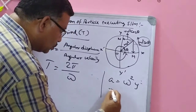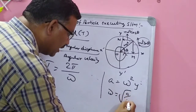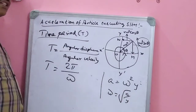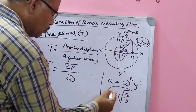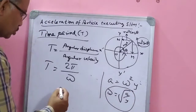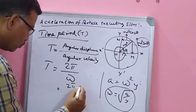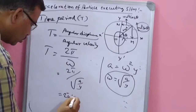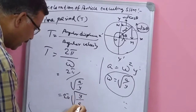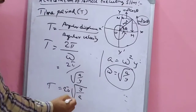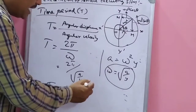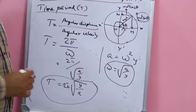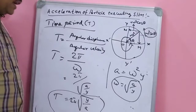From the acceleration expression a = ω²·y, we get ω = √(a/y). Substituting into T = 2π/ω, we get T = 2π·√(y/a). That means T = 2π·√(displacement/acceleration). This is the expression for the time period of the particle executing SHM.